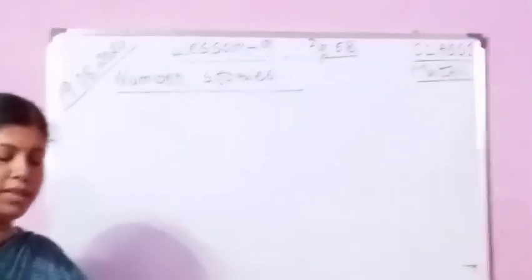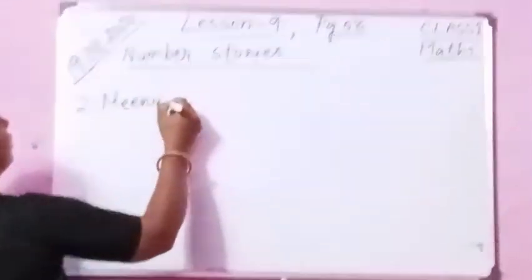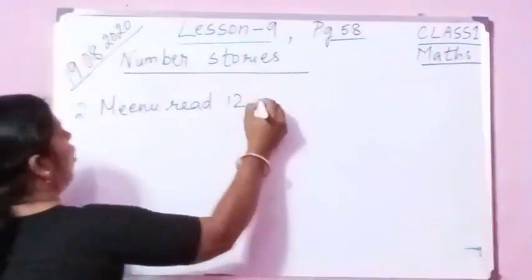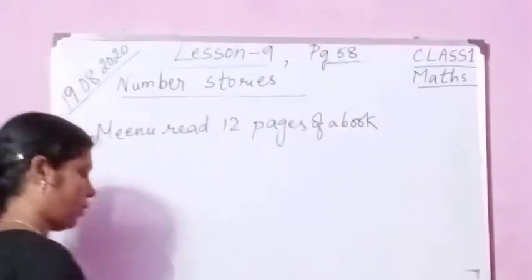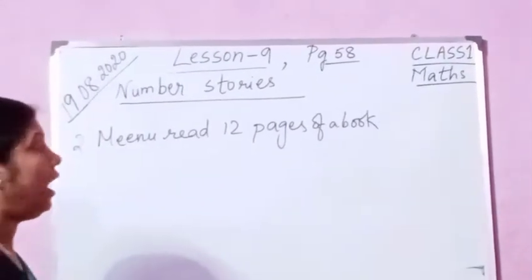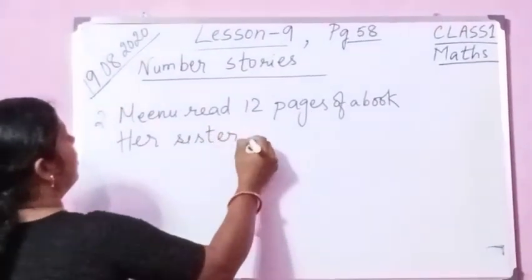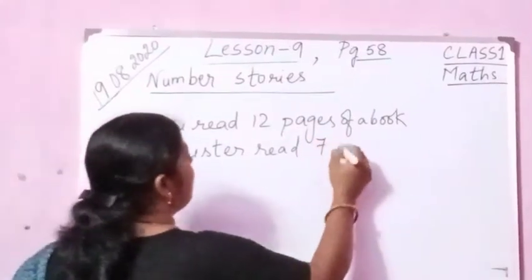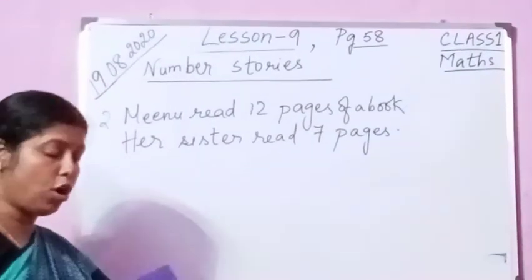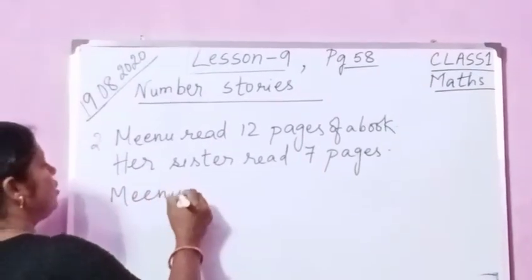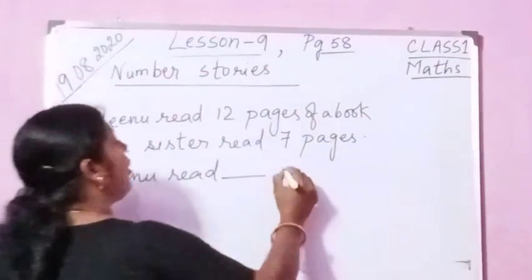Number 2 — you see. Minu read 12 pages of a book. How many pages did she read? 12 pages of a book. Her sister read 7 pages. Her sister read 7 pages. Minu read dash more pages — here we have to find out and write the answer.